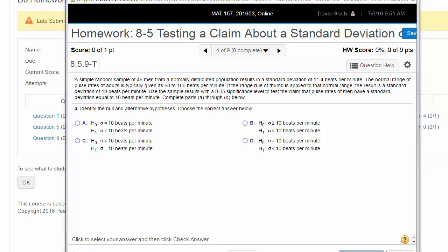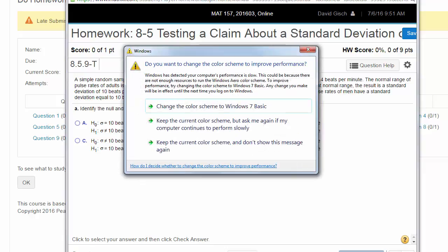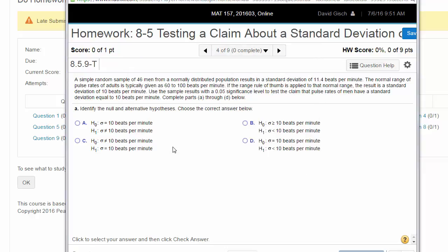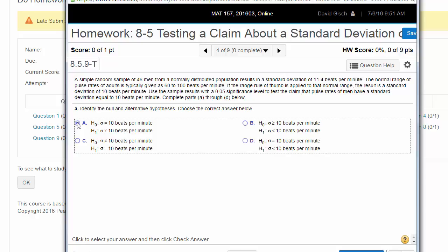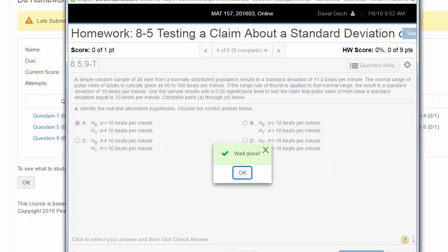All right, so standard deviation, and we always test a claim about a parameter, so sigma standard deviation equal to 10. Equals always goes in the null, so we either need answer A or answer C. And since they said they want us to test the claim that it's equal, therefore the opposite of that would be what's in A. So there's your answer for that.